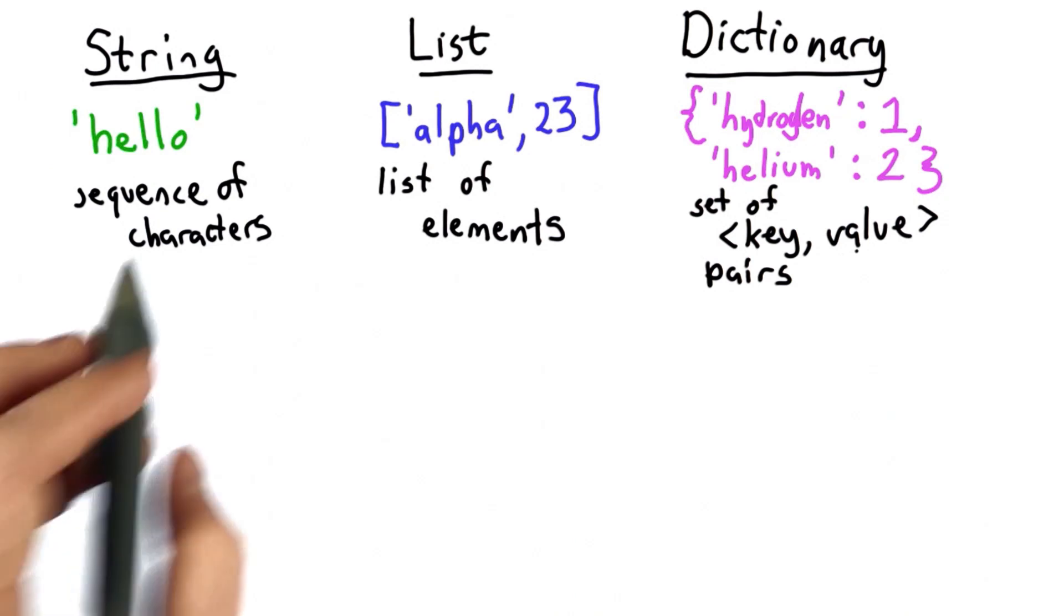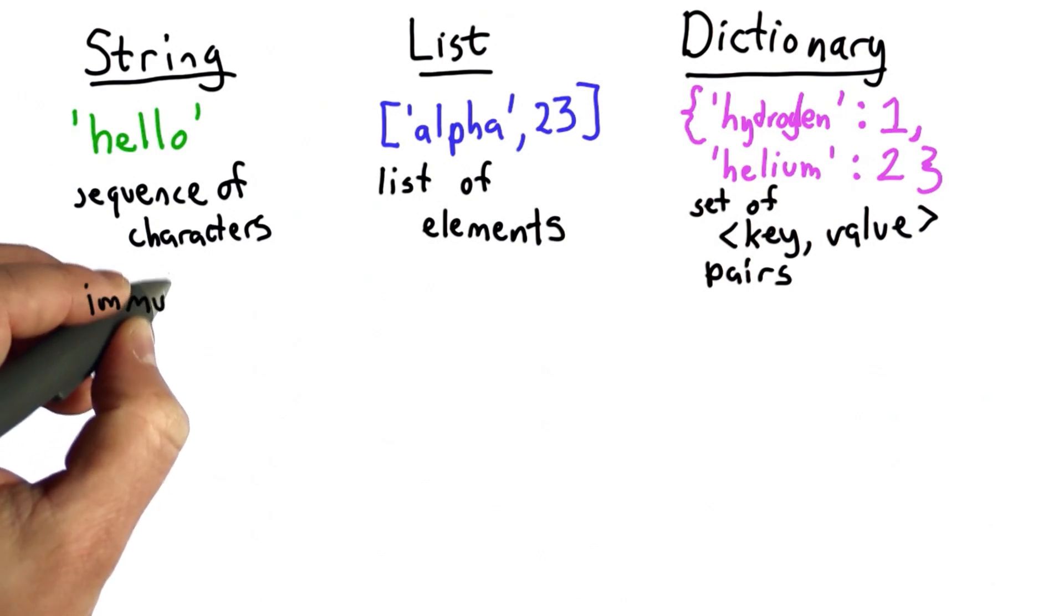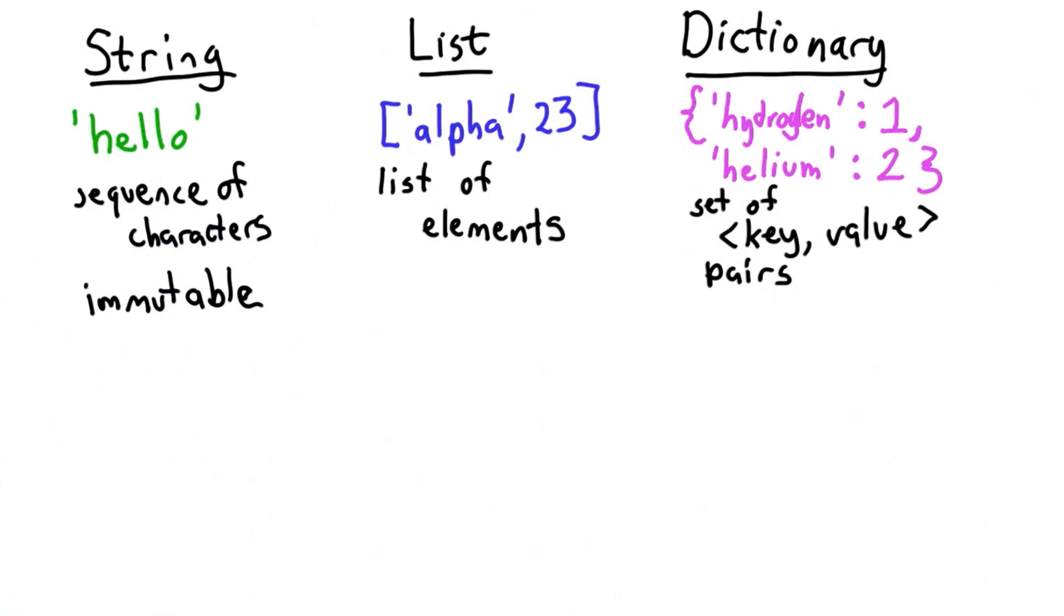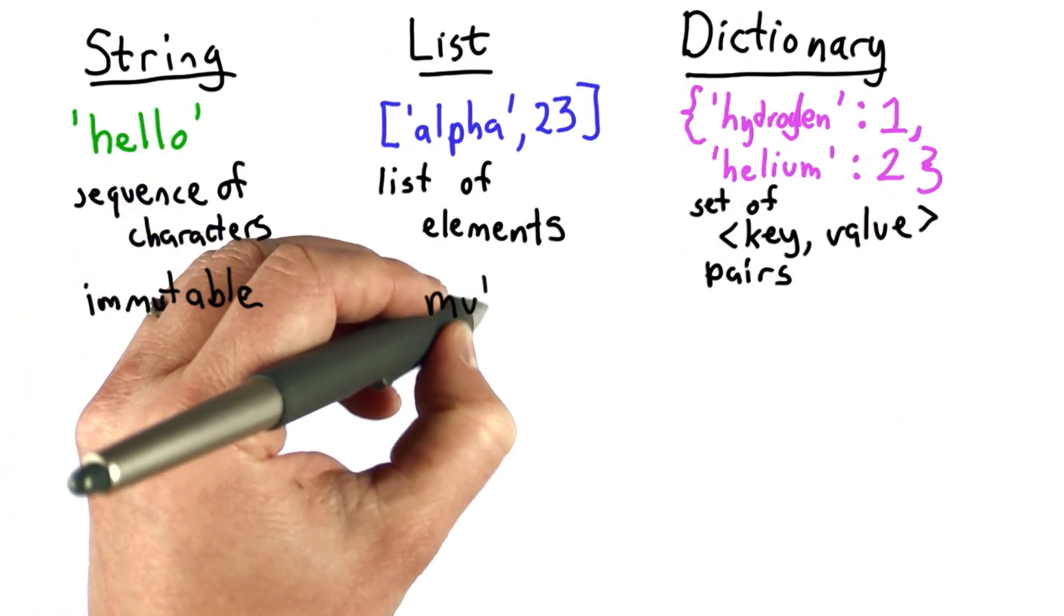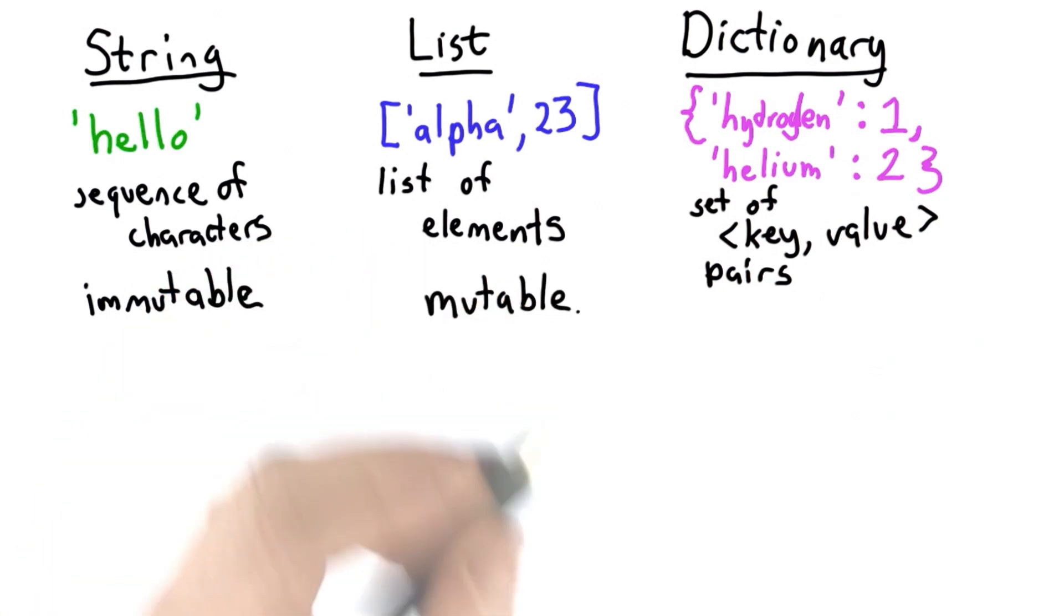So one important property of all types is whether they're immutable or mutable. We saw that the string was immutable. That means once we create a string, we can't modify that string. It has the same value it always has. A list was mutable. We could change the values of elements in the list. After we create the list, we could append to the list, adding new elements to it.